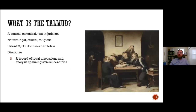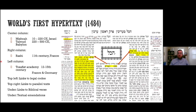To quickly introduce the Talmud: it's a central canonical text in Judaism written in several different languages. It's a legal, ethical, and religious text containing extensive discourse — a record of legal discussions and analysis spanning several centuries. Nowadays it's the focus of much religious and academic interest. It might also be considered the world's first hypertext, in the sense that it's composed of several different documents by different authors in different centuries, all on the same page, referencing one another in the text. For example, here in the central column is the main text, with little bits of text commenting upon it, and they reference one another.